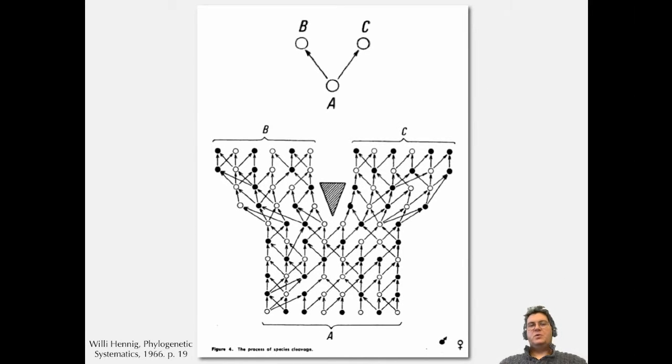Here's a diagram from Hennig showing what a tree represents. At the bottom you have the actual population history - males and females having offspring, and the offspring spread. Then at some point something like a mountain range pops up, and suddenly they can't breed anymore, so now we have two different populations, B and C.